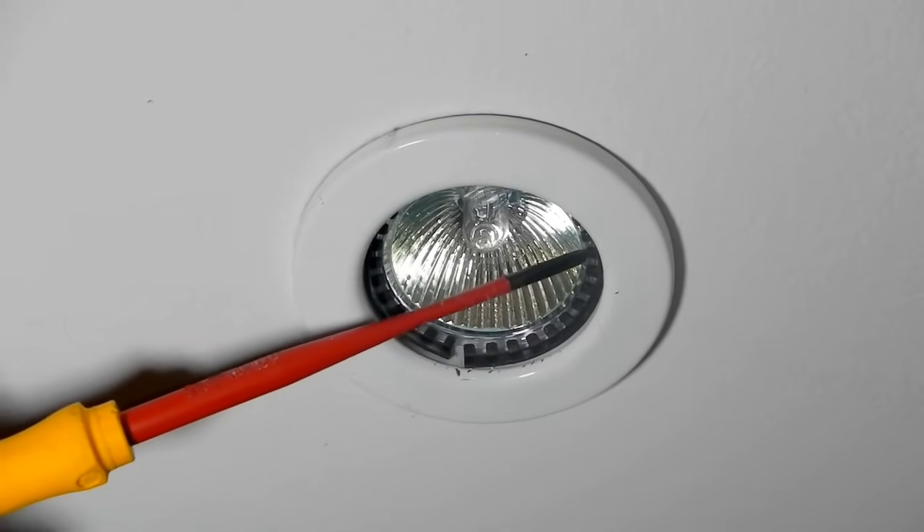The first thing you need to do is place the screwdriver in between the bulb and the circlip. Wiggle gently, ensuring you do not puncture the glass, then gently pry the circlip down. Ensure you have a grip on the circlip so it doesn't flick out of the fitting.